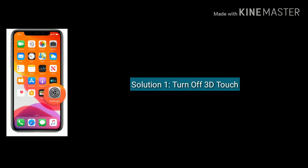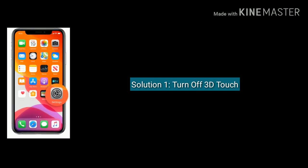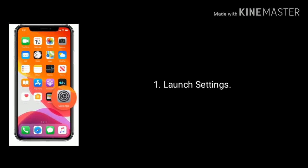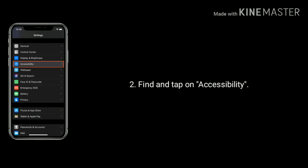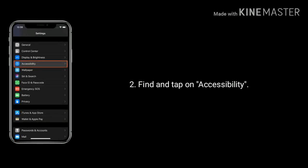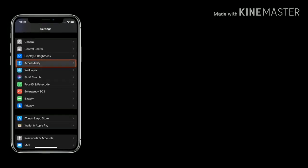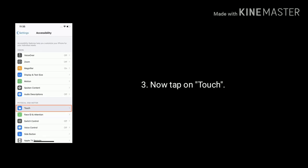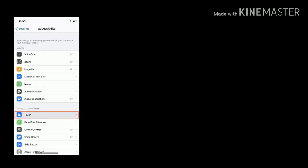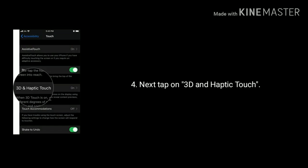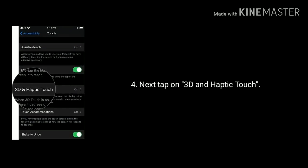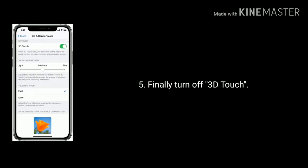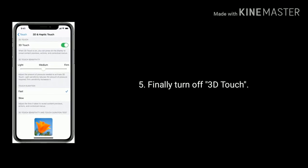Solution 1 is Turn off 3D Touch. To do that, first launch the Settings app. Next, find and tap on Accessibility. Scroll down the screen and tap on Touch. Next, tap on 3D and Haptic Touch. Finally, turn off 3D Touch.